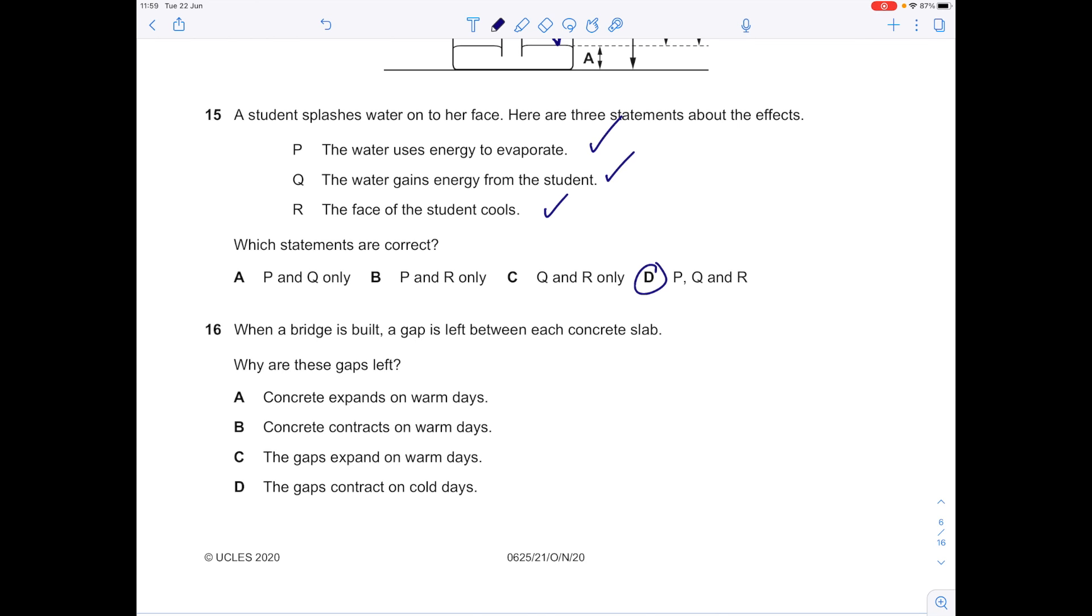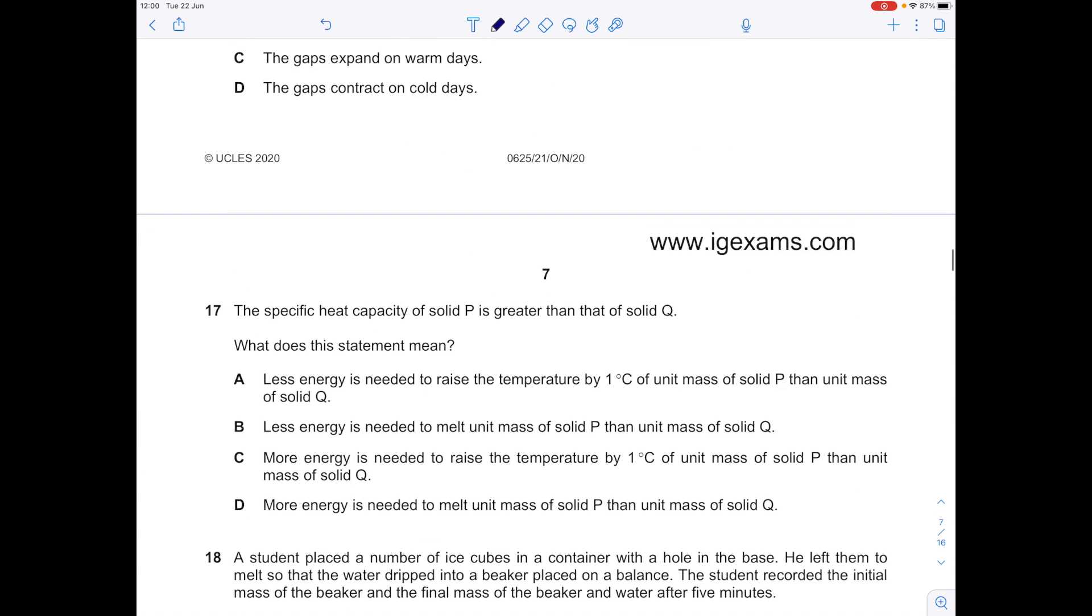When a bridge is built, a gap is left between each concrete slab. Why are these gaps left? Concrete expands on warm days. Yes, it makes sense that when things are heated they expand because those particles are further apart. And so the answer here is A.